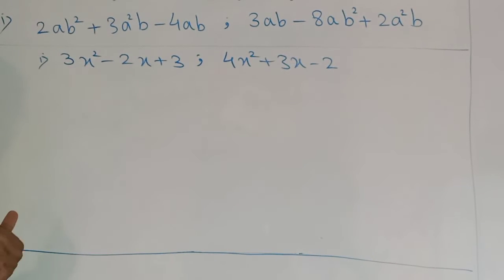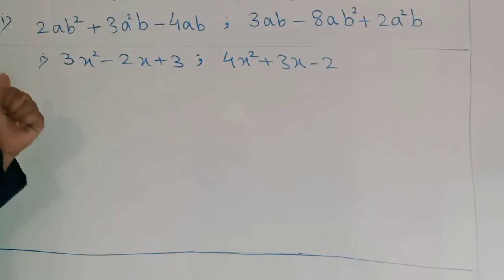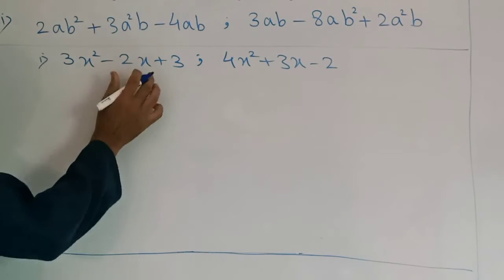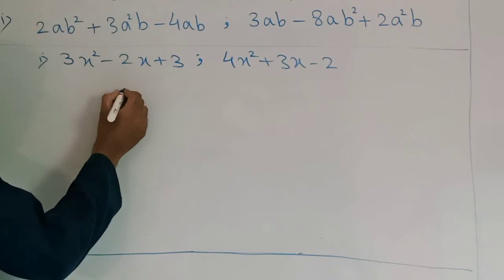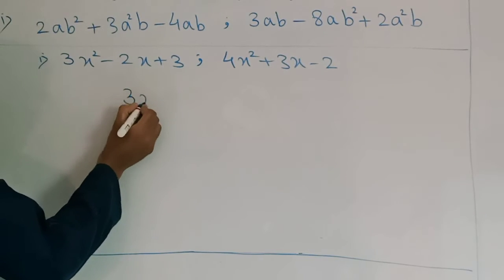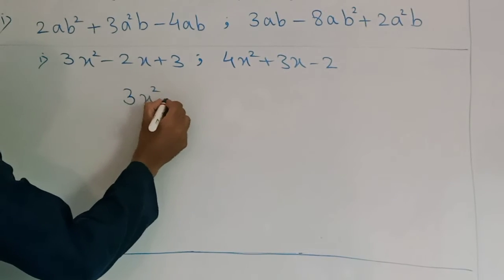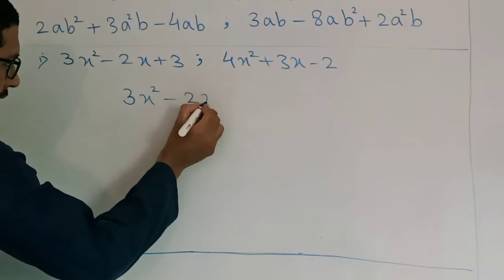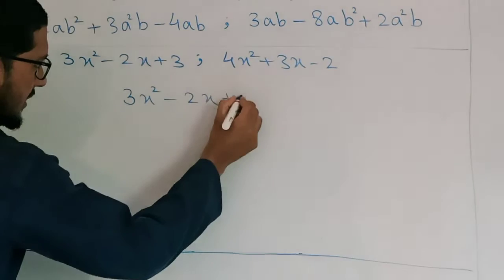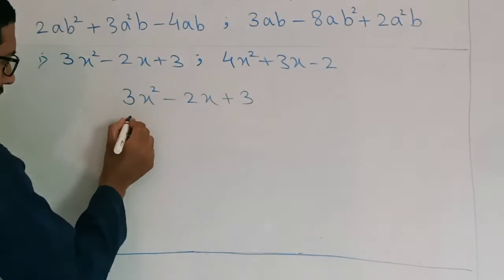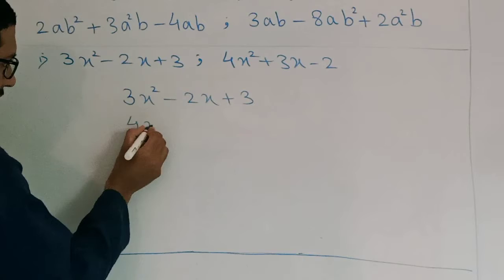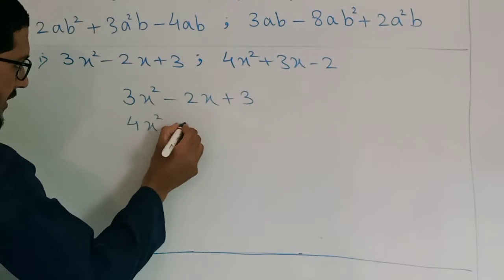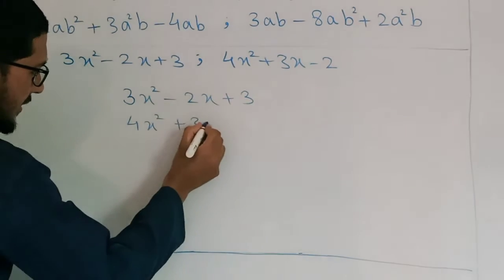Now we have to subtract these two polynomials. First we write the first polynomial: 3x² minus 2x plus 3. Then the second polynomial: 4x² plus 3x minus 2.